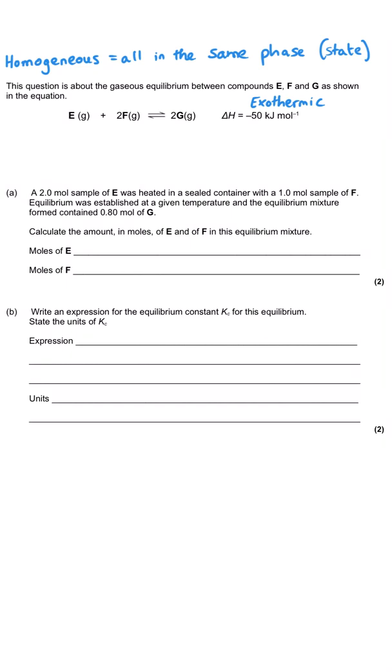In part A, they tell us that two moles of sample E was heated in a sealed container with one mole of sample F and so that is the initial moles in this mixture. They haven't told us that there is any G, so we assume that the starting moles of G is zero. Then it says that equilibrium was established at a given temperature and the equilibrium mixture contains 0.80 moles of G, so G has increased from 0 to 0.8 moles at equilibrium.